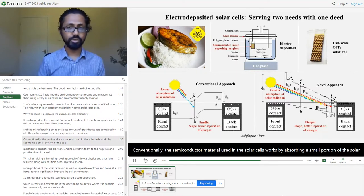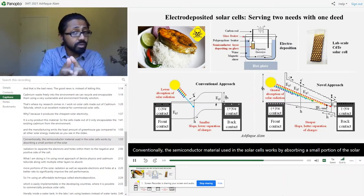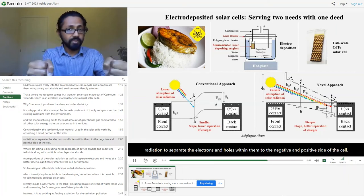Conventionally, the semiconductor material used in the solar cells works by absorbing a small portion of the solar radiation to separate the electrons and holes within them to the negative and positive side of the cell.